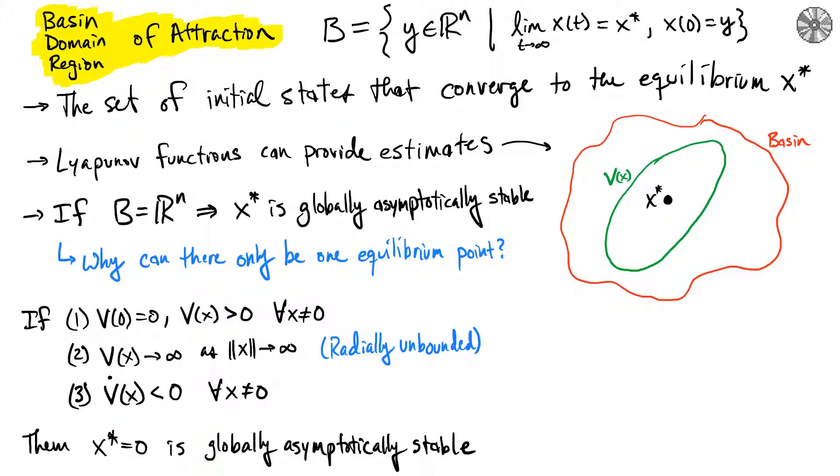attraction, the domain of attraction, or the region of attraction. Effectively, it is the set of initial states that will converge to your equilibrium x*, so it's all starting positions such that the system trajectories eventually